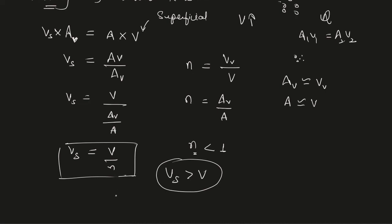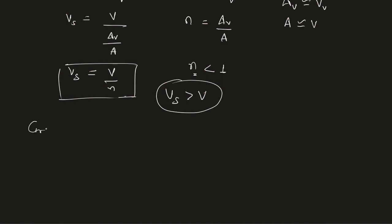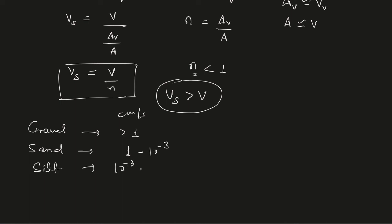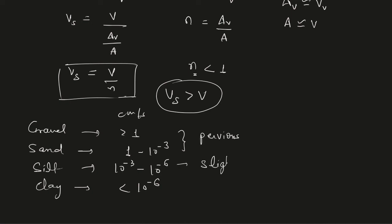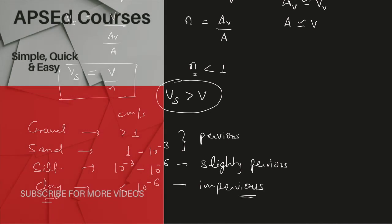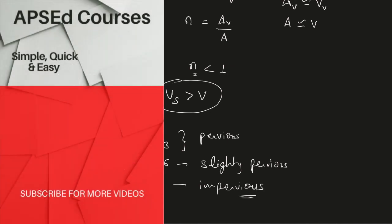Typical permeability values in cm/s: gravel is greater than 1; sand is between 1 and 10⁻³; silt is between 10⁻³ and 10⁻⁶; and clay is less than 10⁻⁶. Gravel and sand are classified as pervious, silt as slightly pervious, and clay as impervious. Therefore, to reduce seepage effects, clay material can be provided in an area since it has a very low coefficient of permeability.